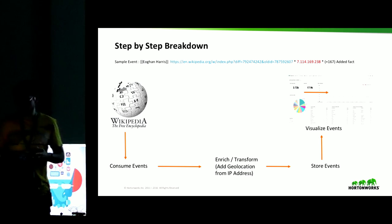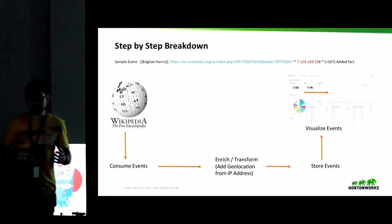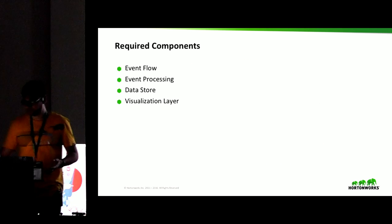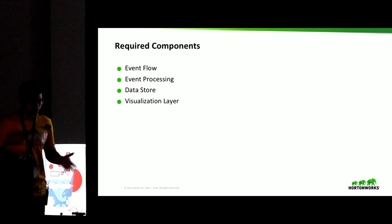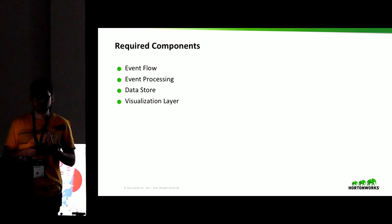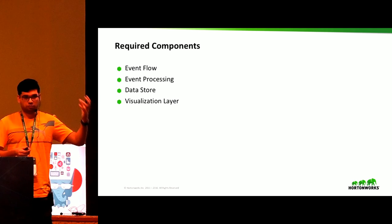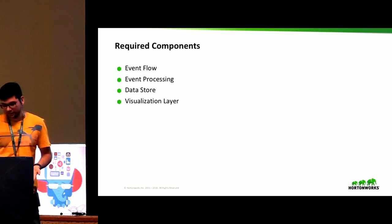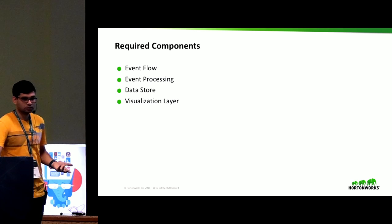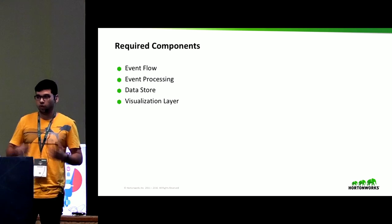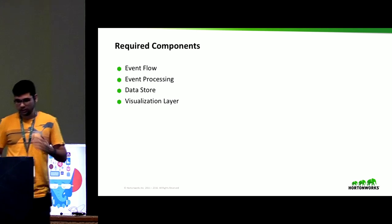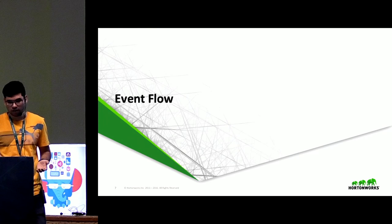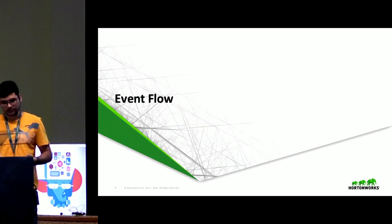The final layer of the solution is a visualization layer where we create dashboards, visualize events, and analyze them. To build this complete solution, we need four components. First is event flow — transferring events from source to destination in a reliable and guaranteed way. Second is event processing — processing and enriching events one by one. Third is storing those events. And finally, visualizing those events in a visualization layer. I'm going to discuss all four components one by one.